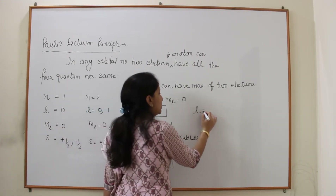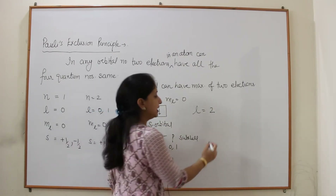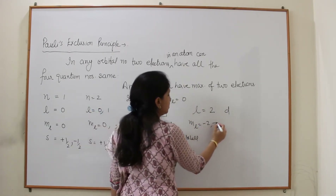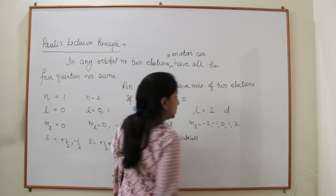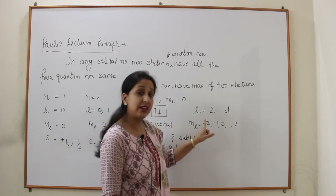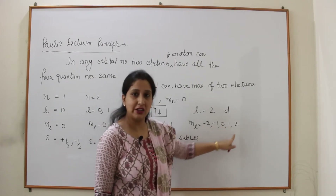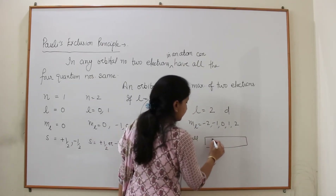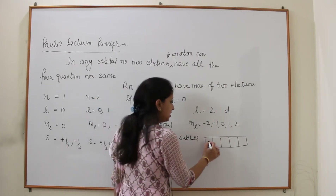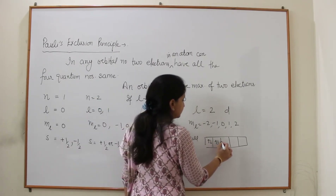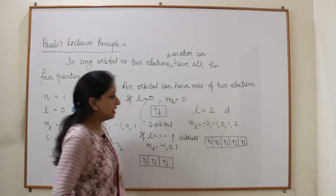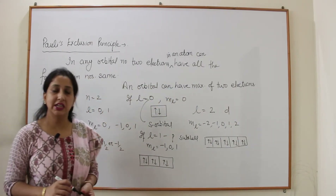If L=2, this means the D sub-shell. ML values are −2, −1, 0, +1, and +2 — so there are 5 orbitals in the D sub-shell. Each orbital holds a maximum of 2 electrons, so the D sub-shell holds a maximum of 10 electrons.